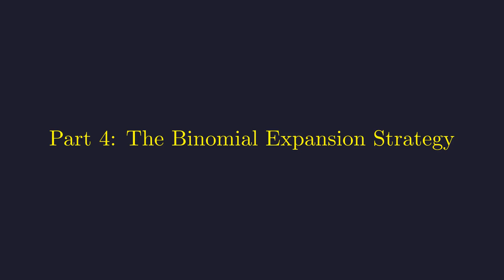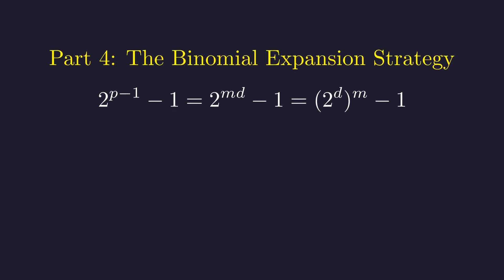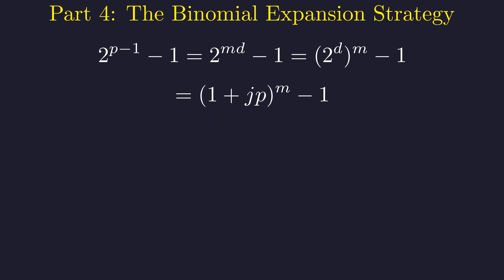Now comes the brilliant part. We'll use this representation of 2 to the d in a binomial expansion to analyze our target expression. First, we substitute our expression. 2 to the power of p minus 1 becomes 2 to the power of md, which is 2 to the d, all raised to the power m minus 1. Now we make the key substitution, replacing 2 to the d with 1 plus j times p.